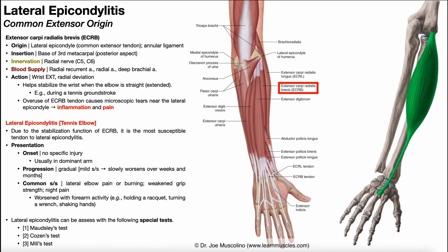I want to begin by talking about this muscle, which is really important and has lots of implications in the condition. It's extensor carpi radialis brevis, or ECRB, shown over here labeled in red and over here in green. The origin of ECRB is the lateral epicondyle, which is shown over here on the distal end of the humerus.